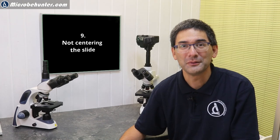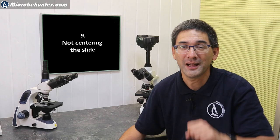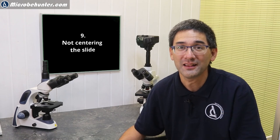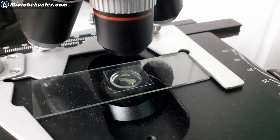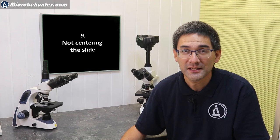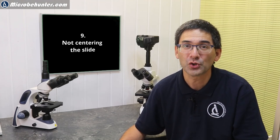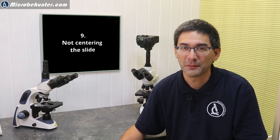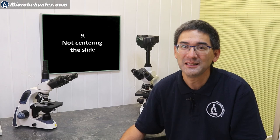Problem number nine: not centering the slide before use. Students raise their hand and say they can't see anything, and I look—they're looking at the label! It sounds funny but it's more common than you think. Always check that the actual specimen is right over the condenser lens and is illuminated, then start observing with low power objective.